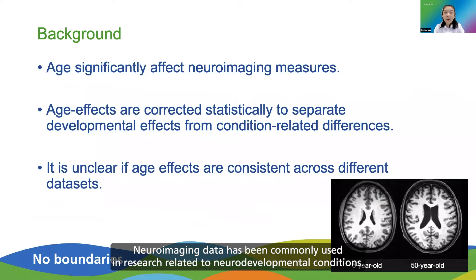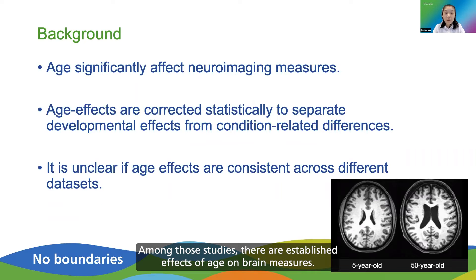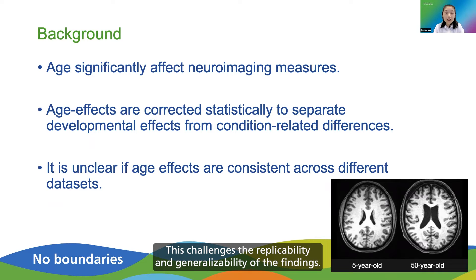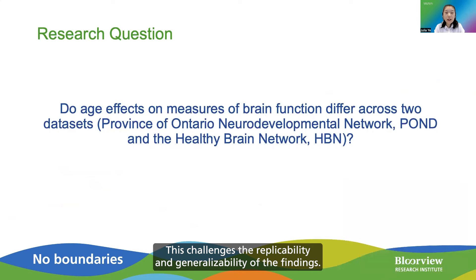Neuroimaging data has been commonly used in research related to neurodevelopmental conditions. Among those studies, there are established effects of age on brain measures. As of now, these age effects are corrected in most research. However, effects may differ between independently collected data sets. This challenges the replicability and generalizability of the findings.